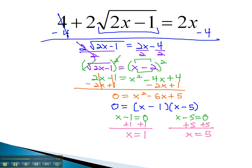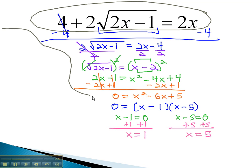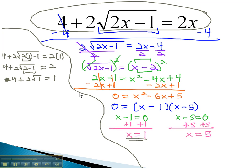However, before we say those are our final answer, we must check them in the original problem. Let's check them over here on the side, first checking that x equals 1. We have 4 plus 2 times the square root of 2x, or 1, minus 1, equals 2 times x, or 2 times 1. On the left side, by multiplying inside the radical first, we get 4 plus 2 times the square root of 2 minus 1, equals 2 times 1, or 2. 2 minus 1 is 1, and so we have 4 plus 2 times the square root of 1 equals 2.